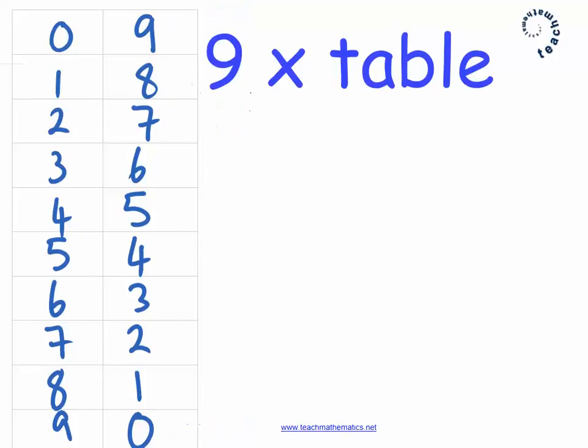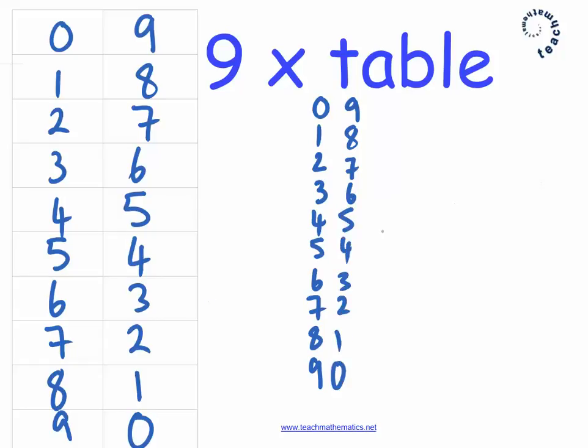Pause the video and try it yourself. Welcome back, let's see that again. So I'm going to write down the digits 1 to 9, getting bigger down the page, and then I'm going to reverse that order, start on 9 and get smaller, but still just writing the digits 1 to 9. And now I've written the 9 times table.